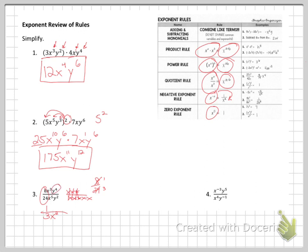So the y's, there are more on top. 4 minus 2 is going to give me y squared on the top. The 1 in front is kind of optional.